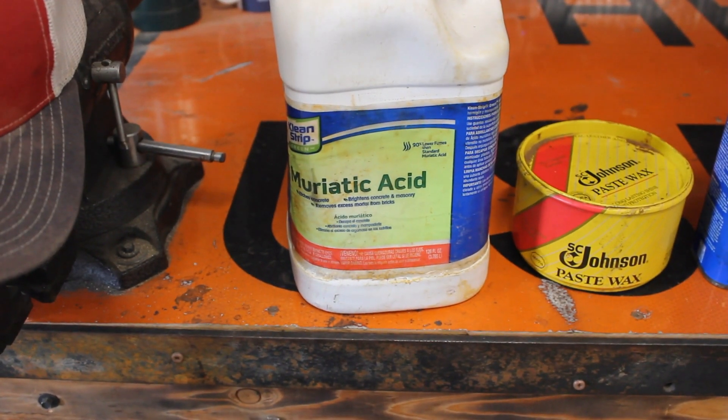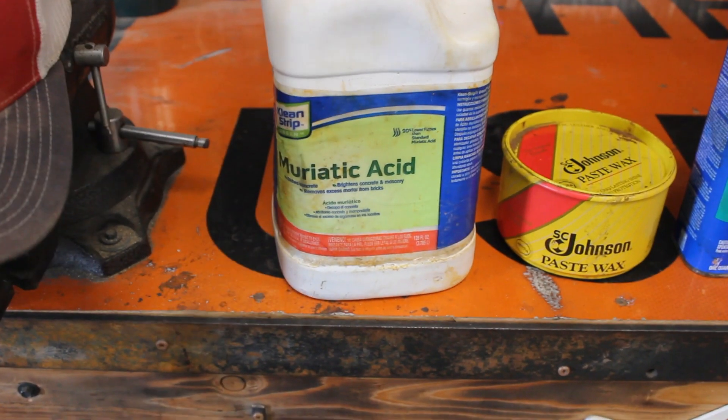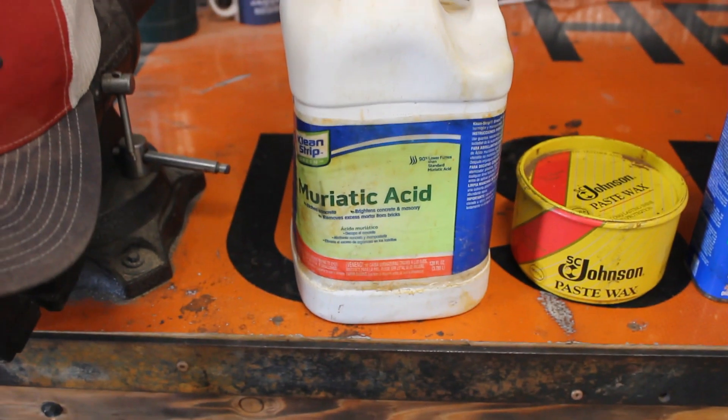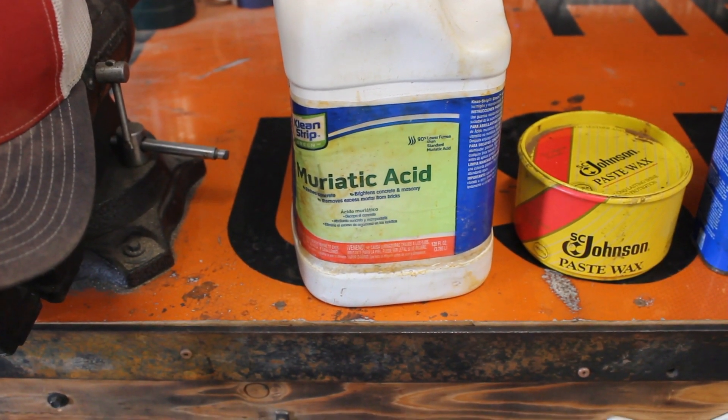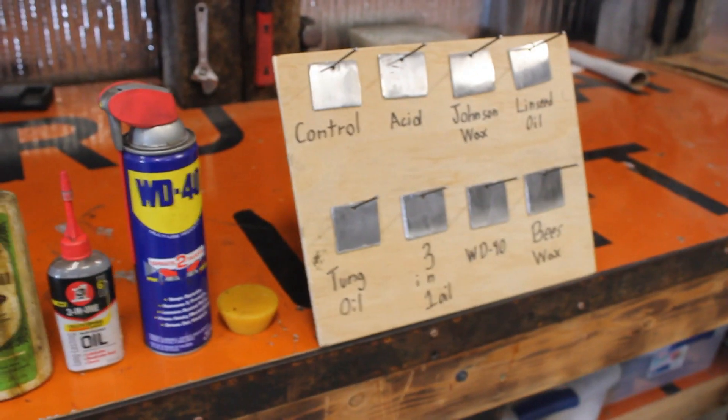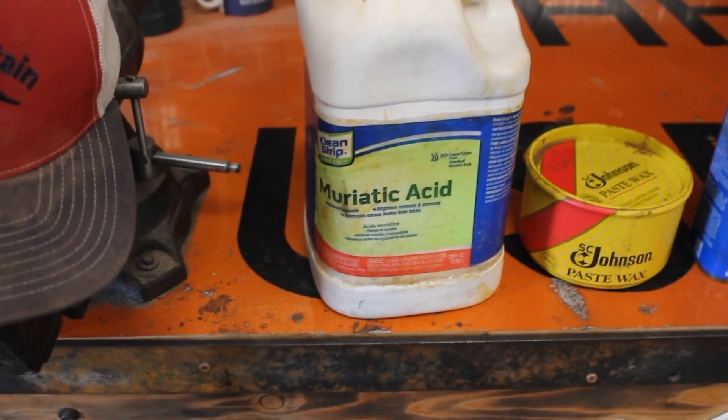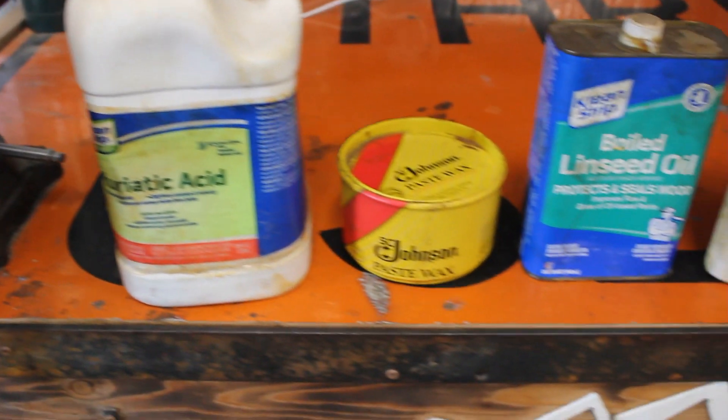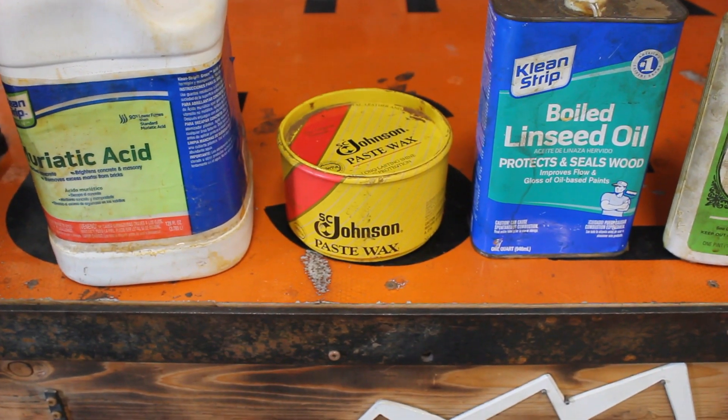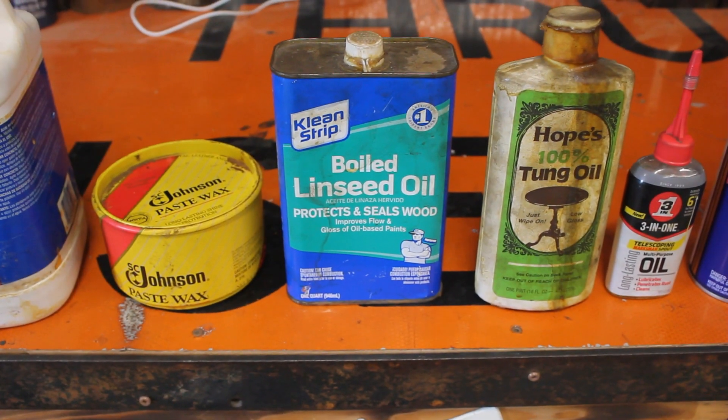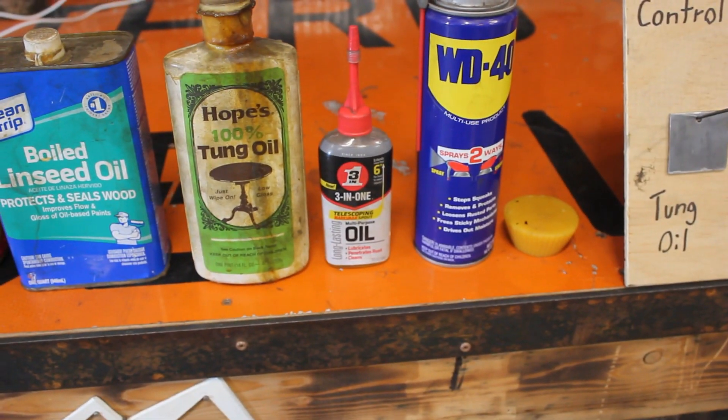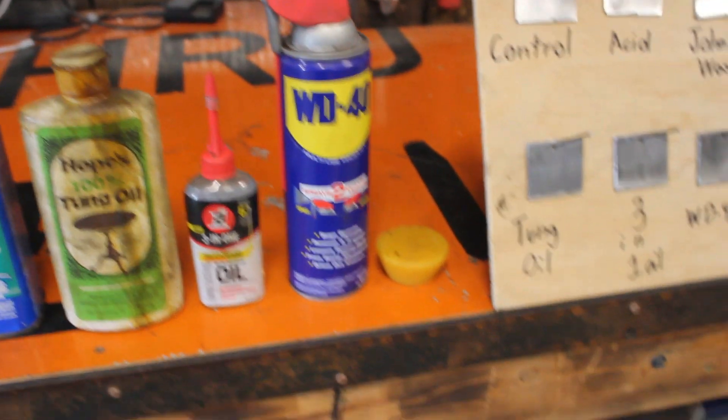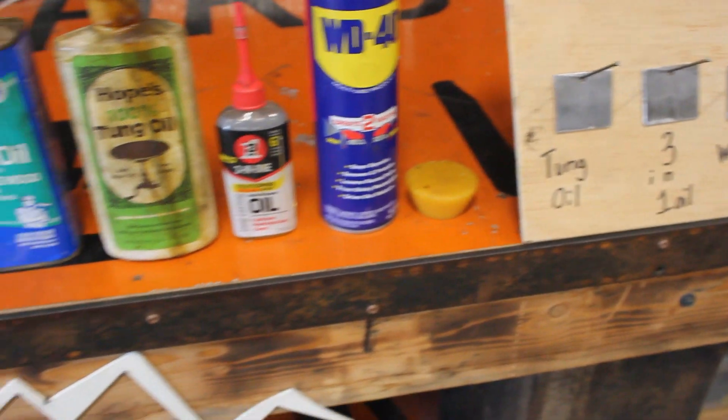Now I'm just going to take you through all the different items that we're using to prevent the rust. This first one we're going to do a muriatic acid, we're just going to dip a piece of metal in acid and then see if that helps prevent the rust. We have Johnson's paste wax, boiled linseed oil, tung oil, three-in-one oil, WD-40, and beeswax.